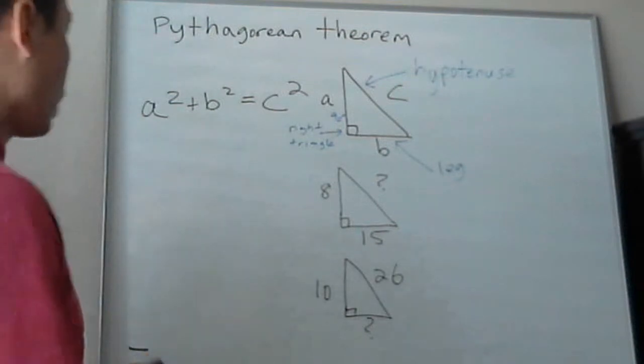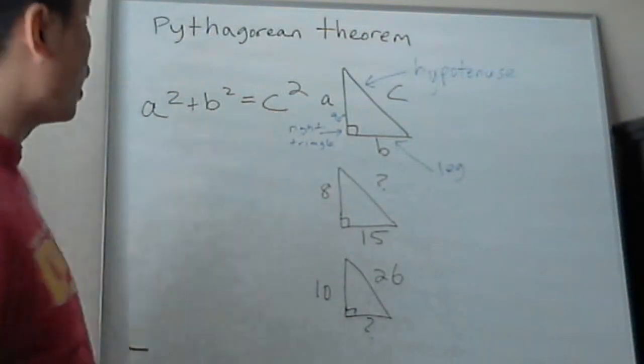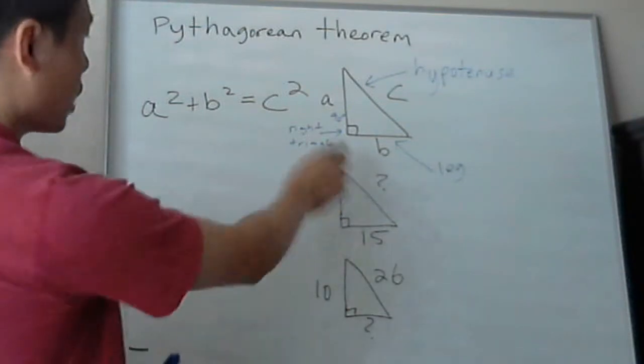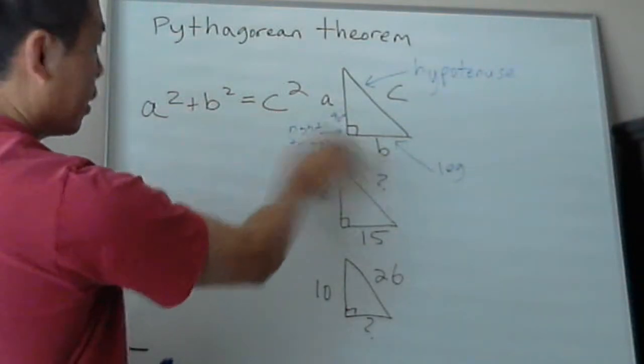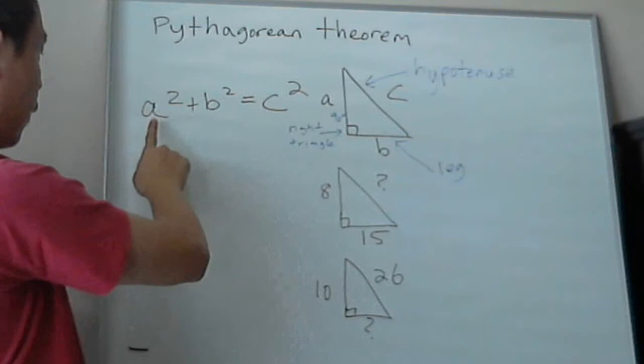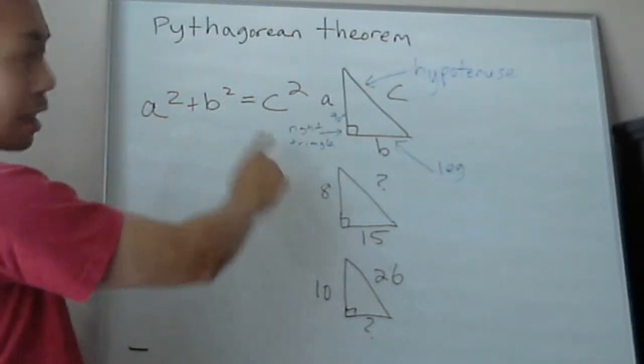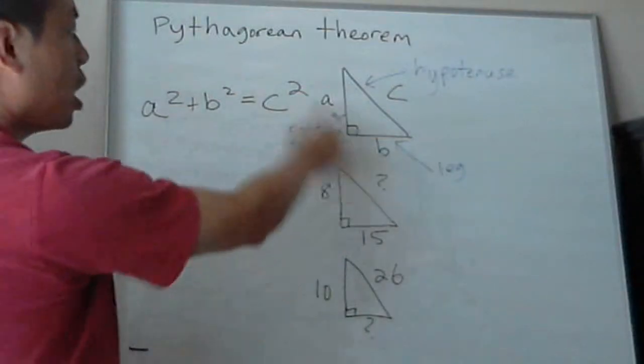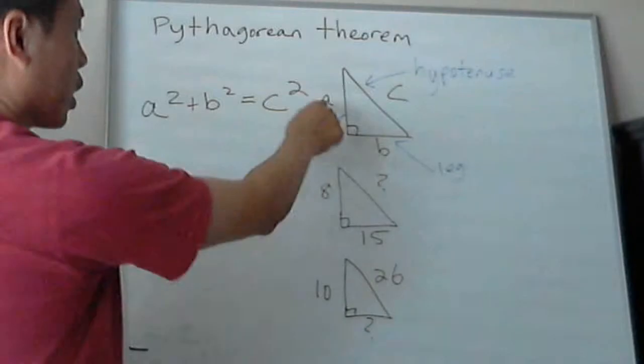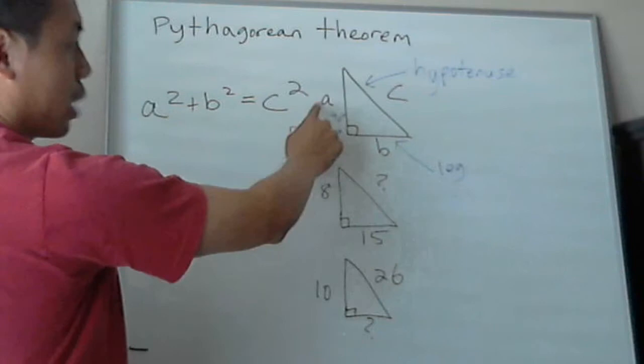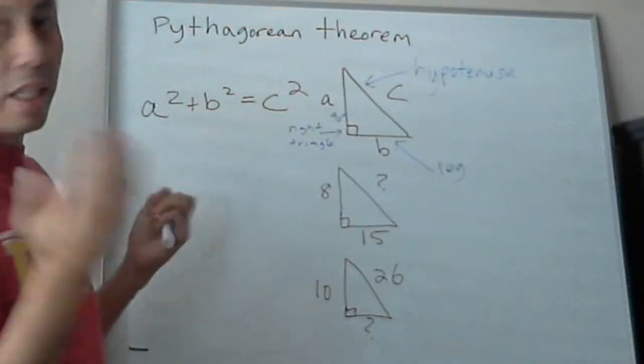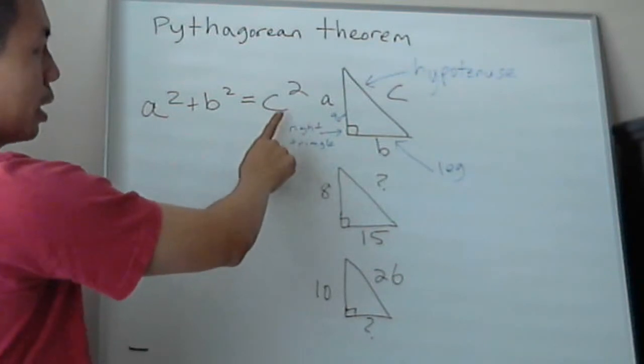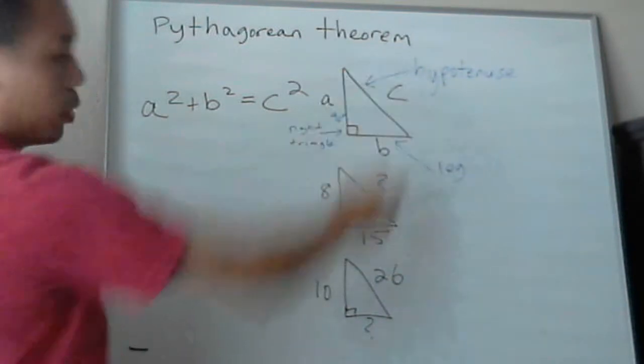So I'm going to give you a couple of examples. But first let me introduce what Pythagorean theorem is. It's basically the two legs squared. So the first leg squared, we call that A, plus the second leg squared. It could be either one. You can interchange it. It doesn't matter which leg you want to start with first. So A squared plus B squared, the leg squared, equals to C squared. C squared is the hypotenuse.